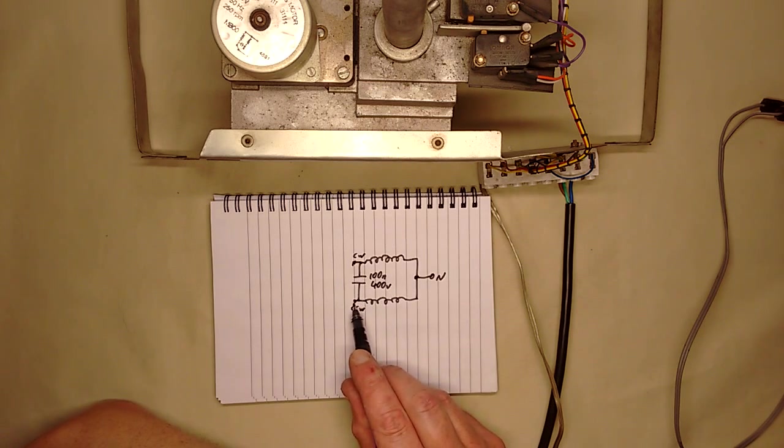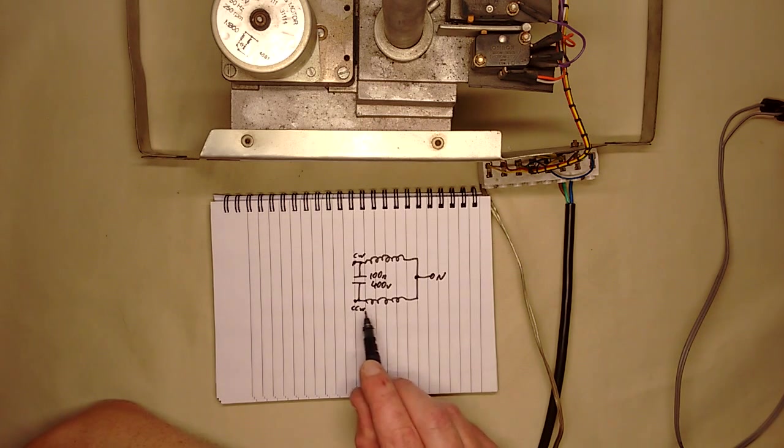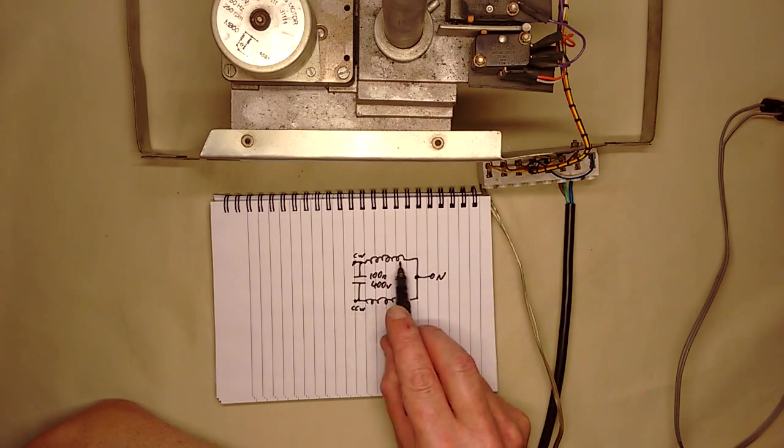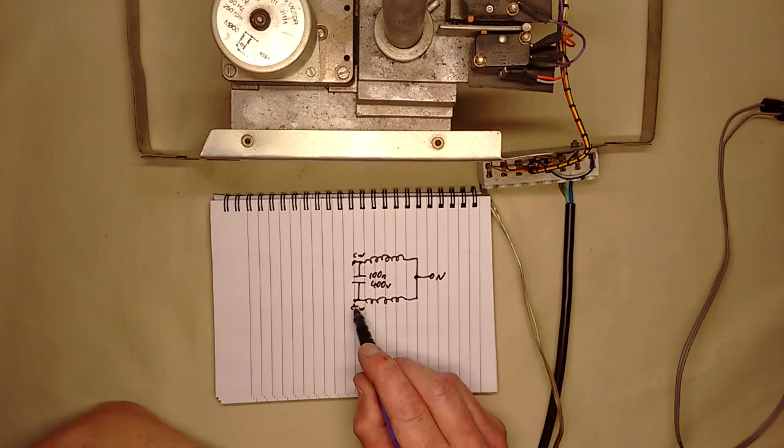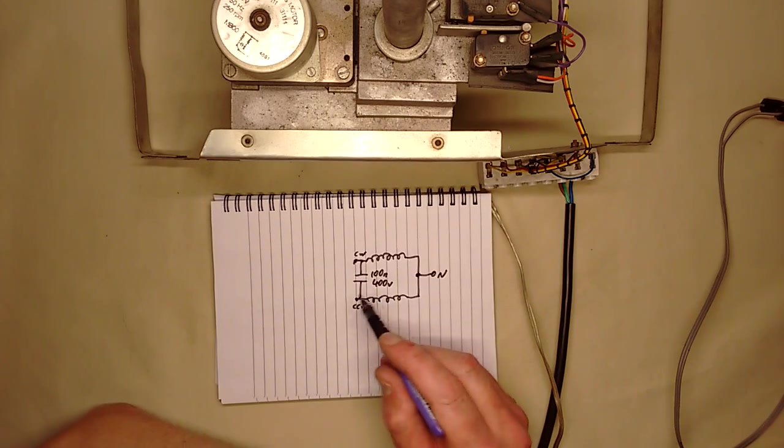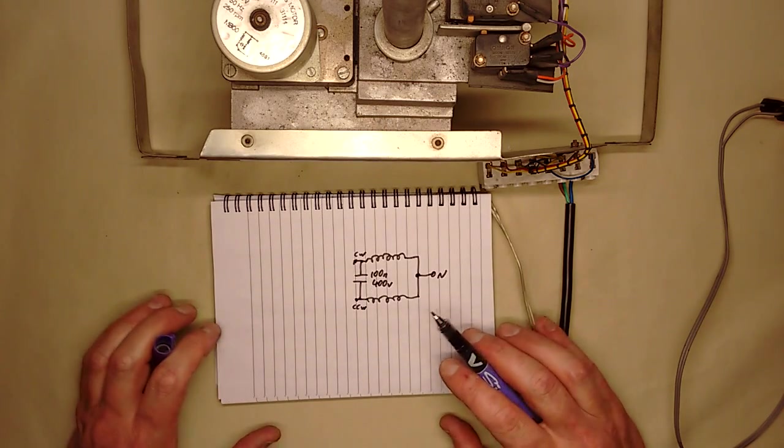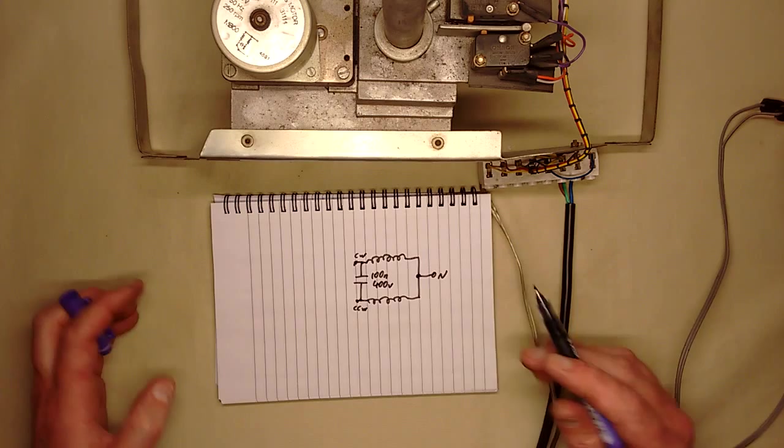If I instead power it from this terminal, if I connect live to this terminal, then this winding is in phase with the mains and this one has that slight phase shift caused by the capacitor. So it's very simple. It means that just alternating between these two windings controls the direction. Let's make sure I'm still in shot here. Yes, I am.